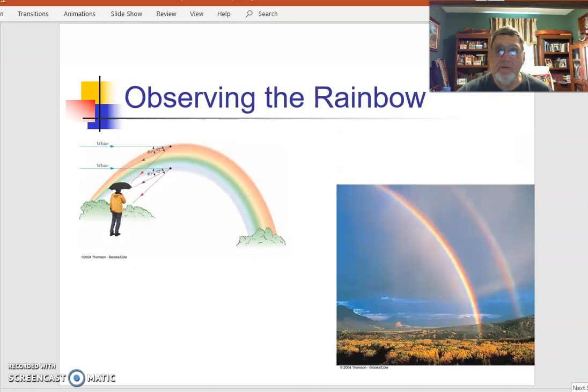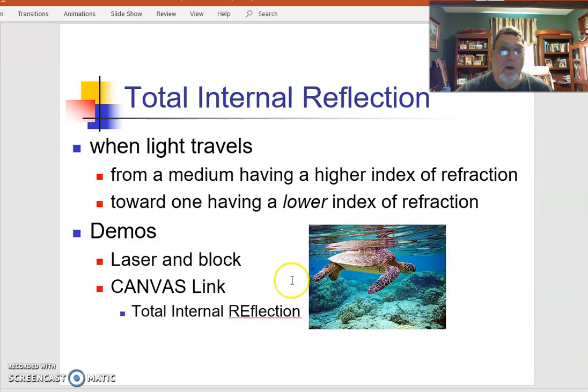Notice how it reversed the order of the colors going in versus going out again on the next reflection. So you're really lucky when you can see the two rainbows. Another effect of having both reflection and refraction at the surface is called total internal reflection.